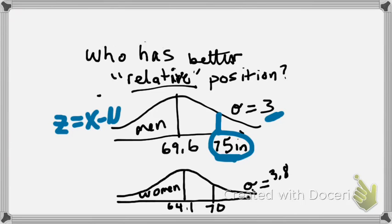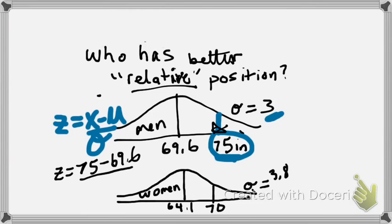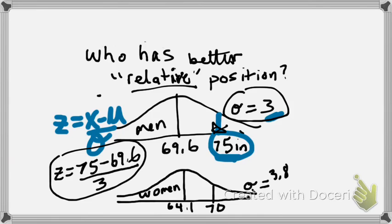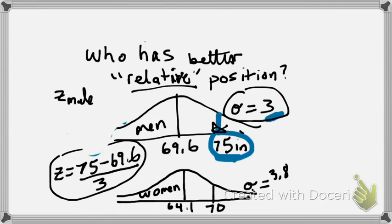So z equals x minus mu over sigma. So let's actually go ahead and get a z-score for that man that's 75 inches tall. The z-score for him would be 75 minus 69.6 divided by the standard deviation of the males, which is 3. Okay, let's crunch that out. So the z-score with regard to that male is 1.8. I'll circle that.